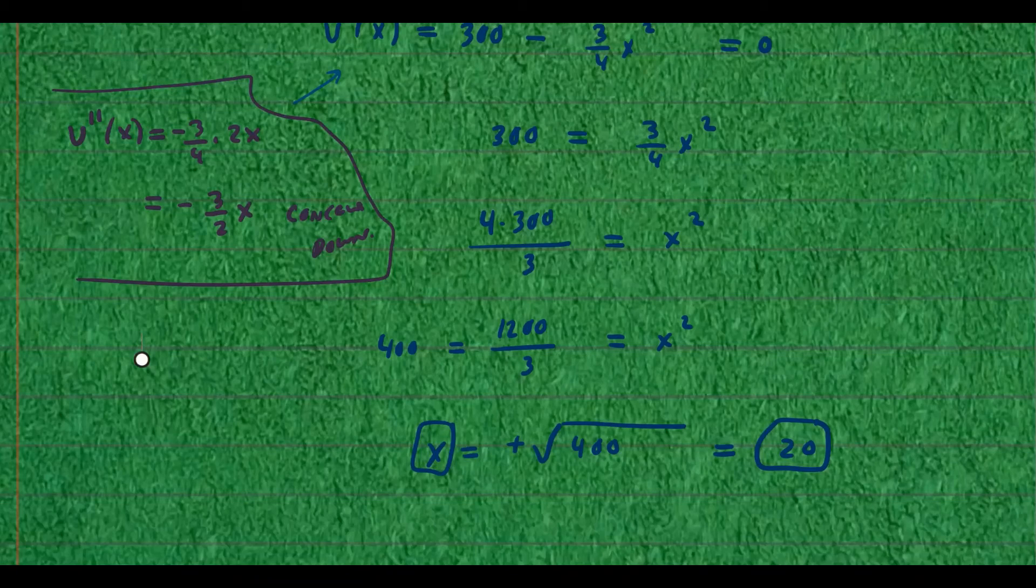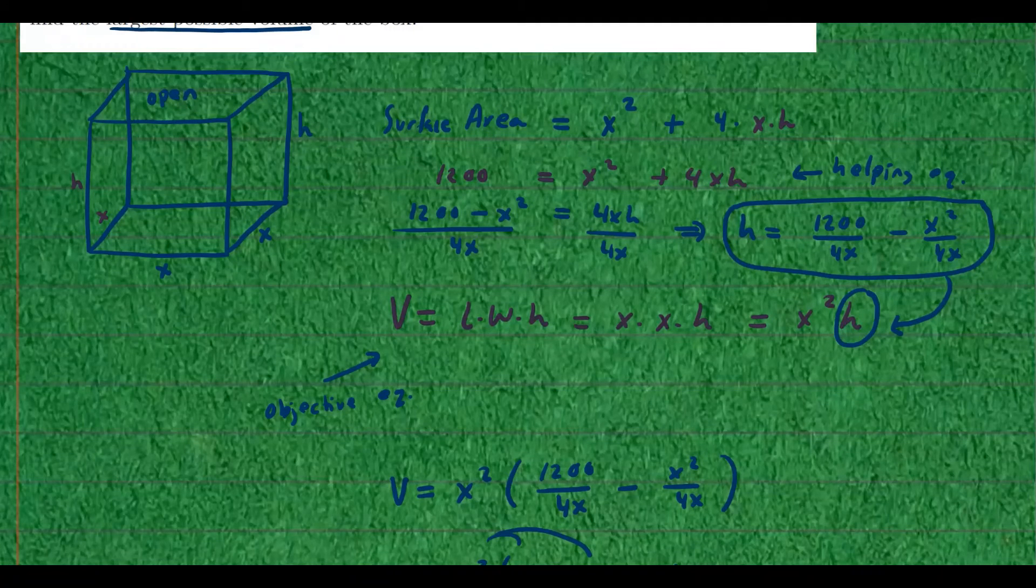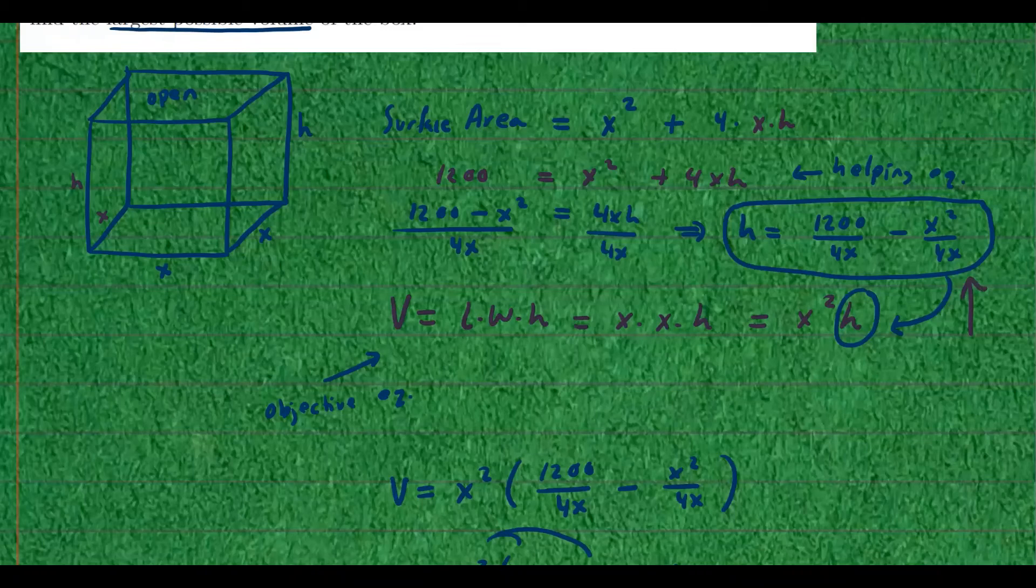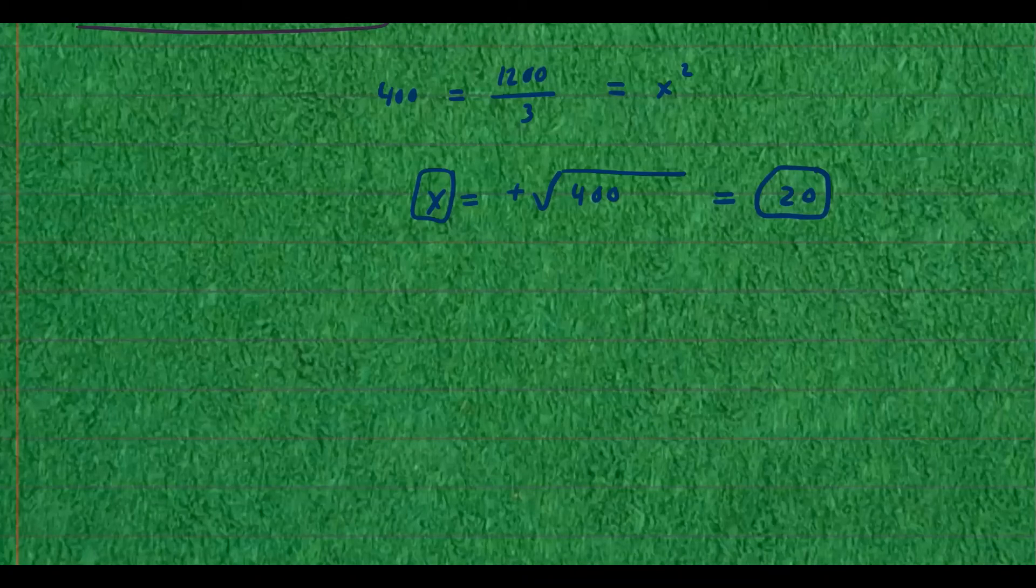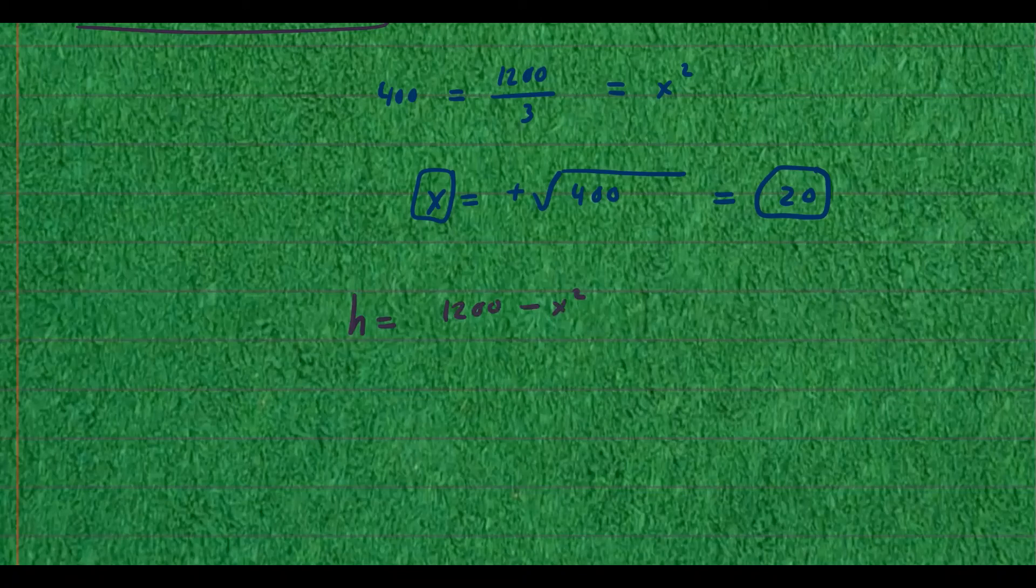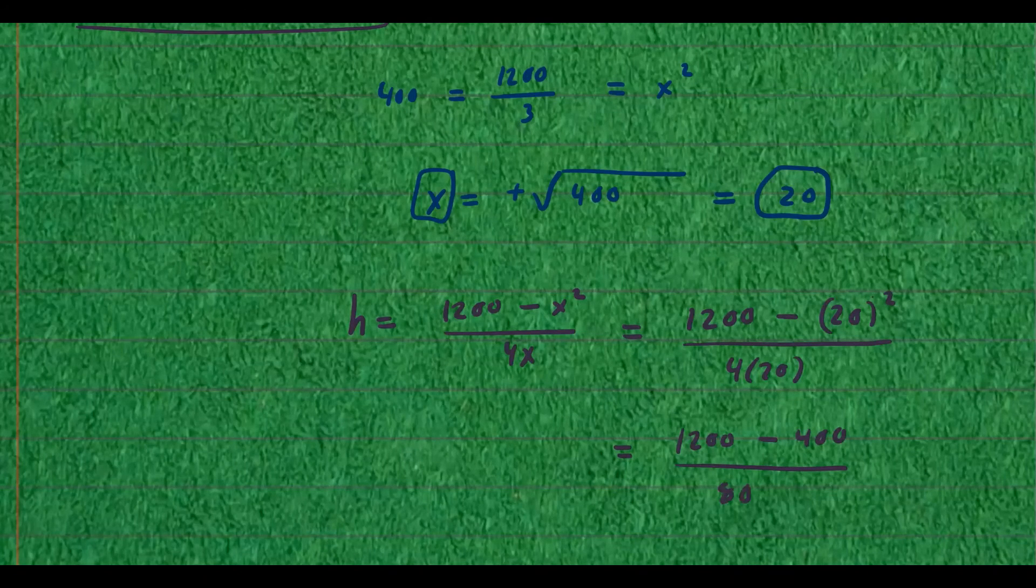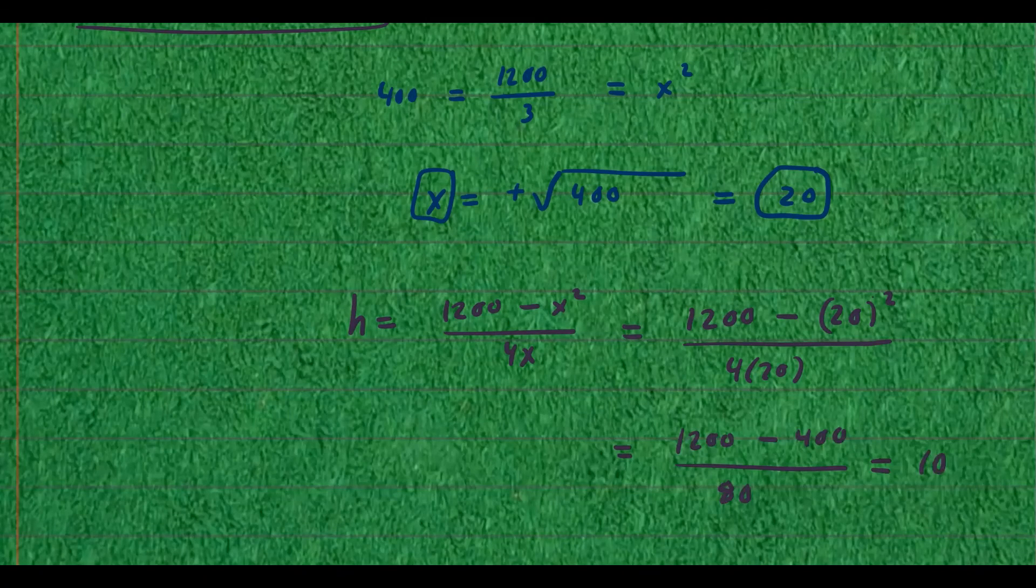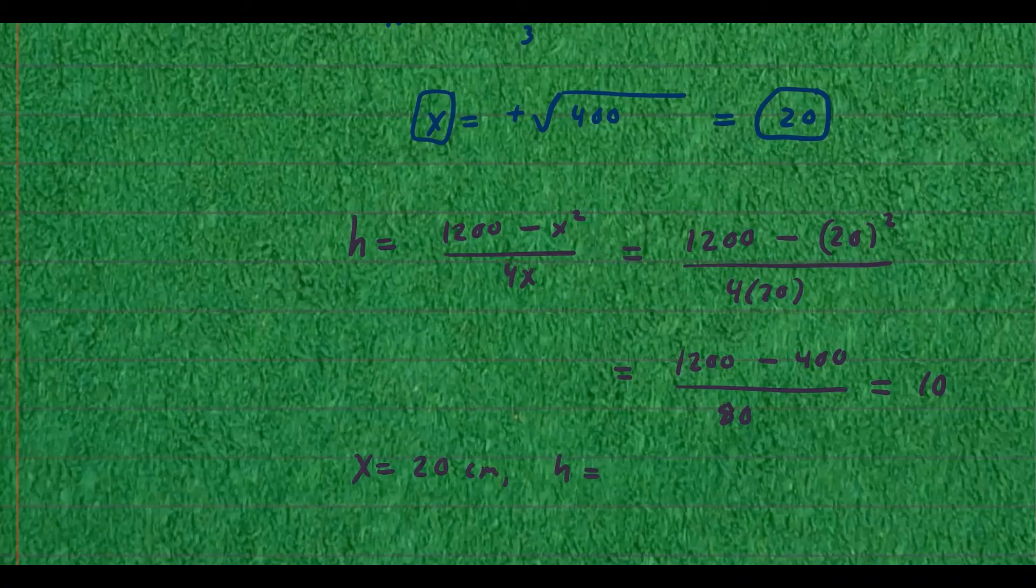So I know one of the dimensions x is 20. Now, what is h? Well, we know that the height has to be that formula right here. So we simply plug in x in there. So we know that height has to be 1,200 minus x squared over 4x. So plug in 20. So you have 1,200 minus 20 squared over 4 times 20. And that's going to give you 1,200 minus 400 over 80. And that is equal to 10. So we know that x has to be 20 centimeters, and the height has to be 10 centimeters.